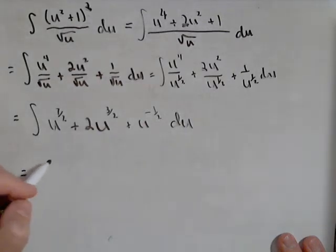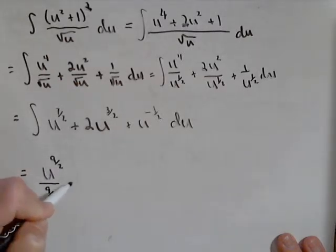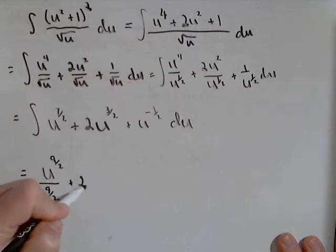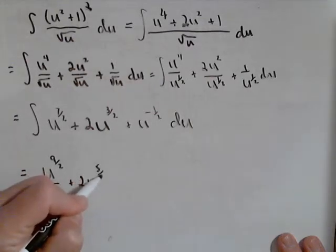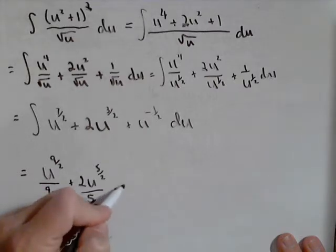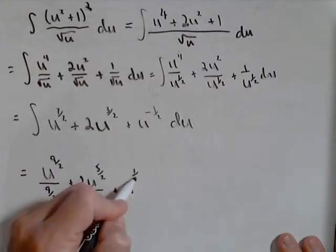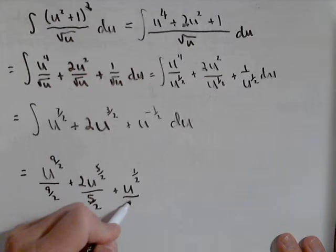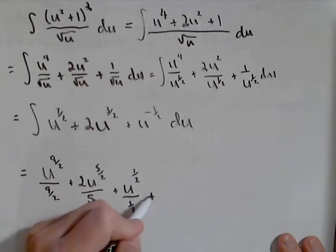Now we'll just do it piece by piece. So you add one and divide by the new exponent: u to the nine halves over nine halves plus two u to the five halves over five halves plus u to the positive one half over one half plus c.